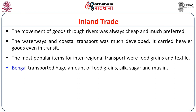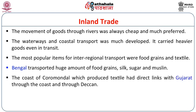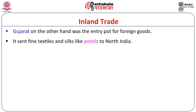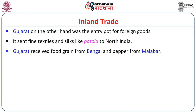Bengal transported huge amounts of food grains, silk, sugar and muslin to the northern states and sometimes to the southern coast. The coast of Coromandel, which produced textile, had direct links with Gujarat, which had popular international ports, and also carried goods to the Deccan ports. Gujarat was an entry point for foreign goods and sent fine textiles and silks like Patola to North India. Gujarat received food grains from Bengal and pepper from Malabar.